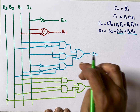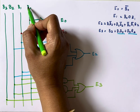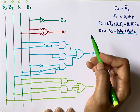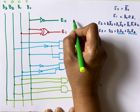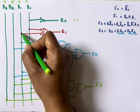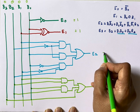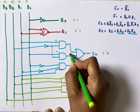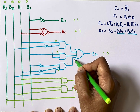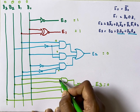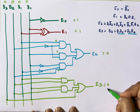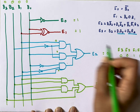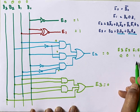When you implement this circuit on a board and apply a BCD number as input, you will get the XS3 equivalent. For example, with BCD input 0000: E0 = B0̄ = 1; E1 = 0 XNOR 0 = 1; for E2, all AND gate inputs include a 0, so all outputs are 0, giving E2 = 0; B3 is also 0, so E3 = 0. The output E3 E2 E1 E0 = 0011, which is indeed the XS3 equivalent of 0.